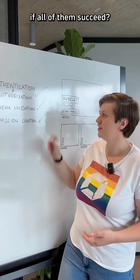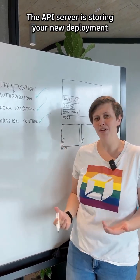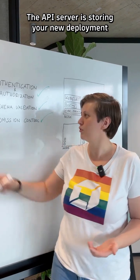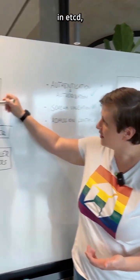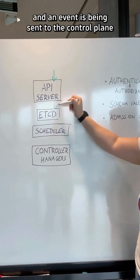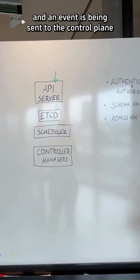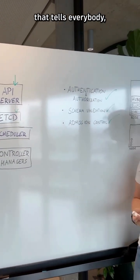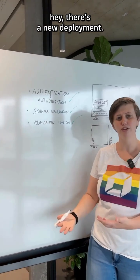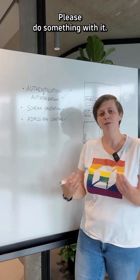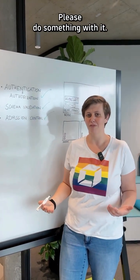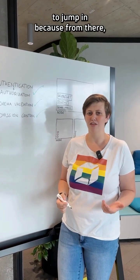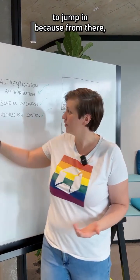If all of them succeed, the API server stores your new deployment in etcd, and an event is sent to the control plane telling everybody: hey, there is a new deployment, please do something with it. And that's the sign for the scheduler to jump in.